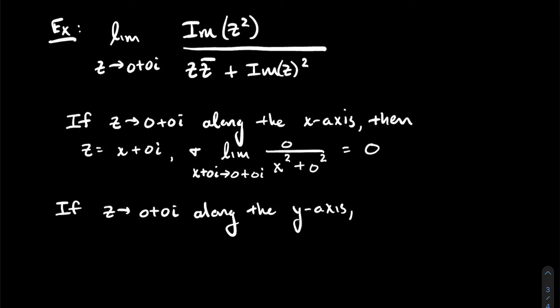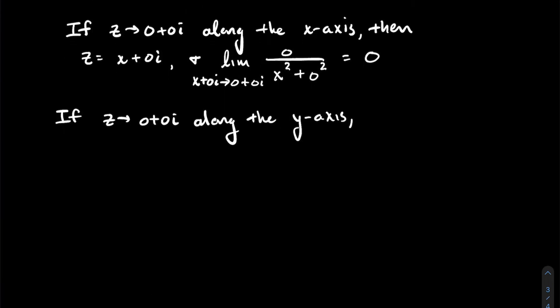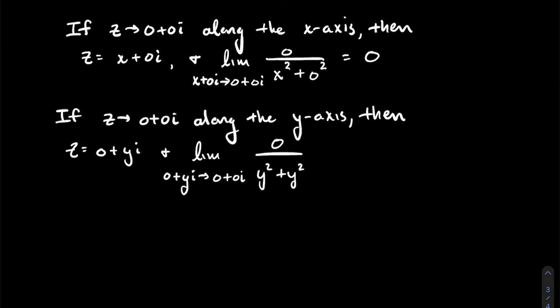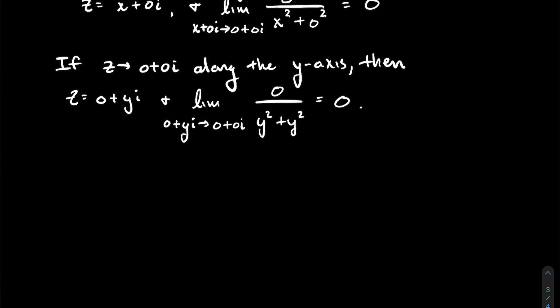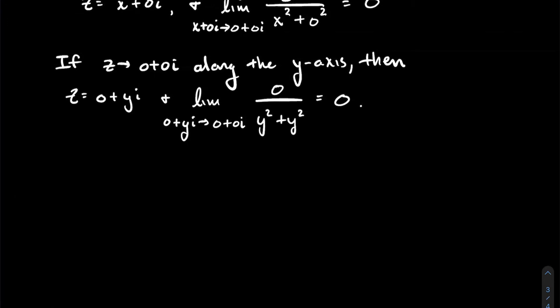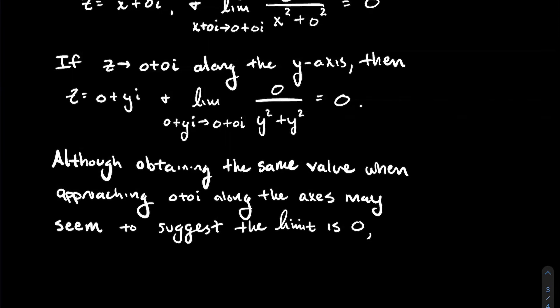Let's check the other axis. What happens if z tends to 0+0i along the y-axis? Then z looks like 0+yi, the real part is 0. If you plug that into the function and simplify, the numerator is 0 and in the denominator you get y squared plus y squared. That's 0 divided by some non-zero number — since y is getting close to 0 but not actually 0 — so the limit along the y-axis is also 0.